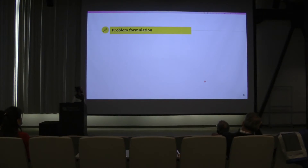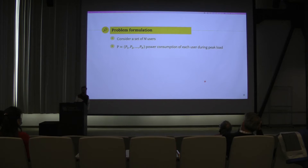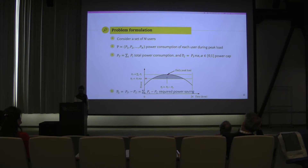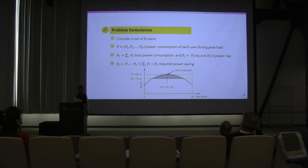I'm going to start from the problem formulation of the reverse auction. We have a set of end users. Each one of them, during the default settings, has power consumption P_i. The sum of all these consumptions would be the total power consumption E_T. We set a power cap, which is basically a fraction of the total power, and we want to find a way to reduce the consumption so that the total power consumption goes from E_T to E_C.